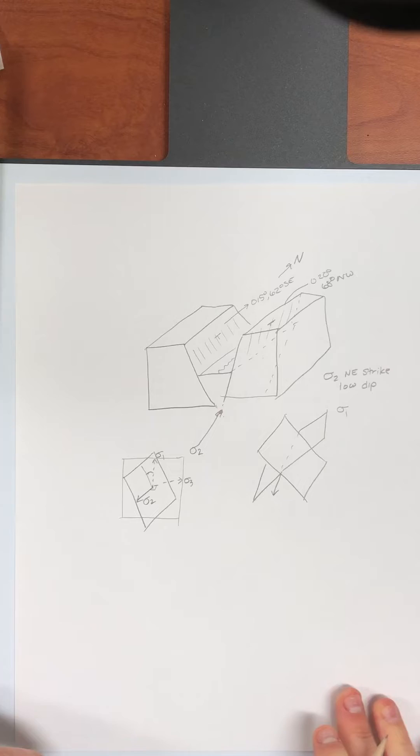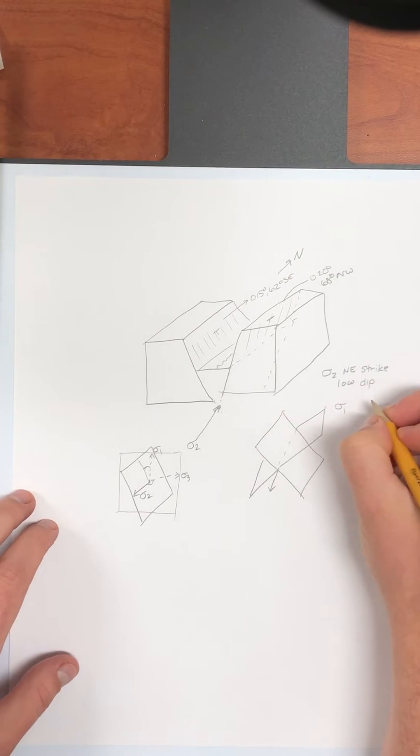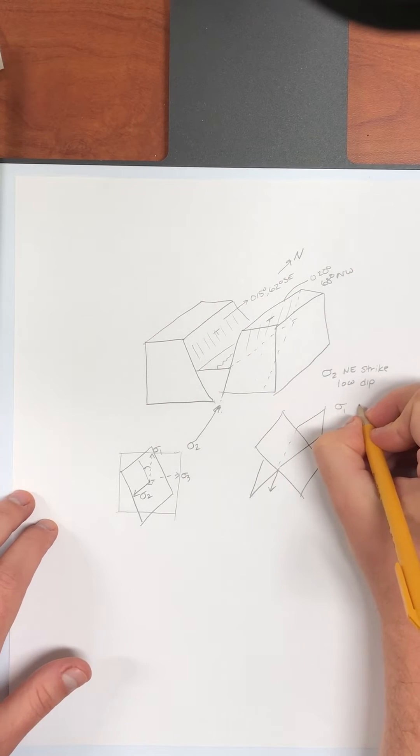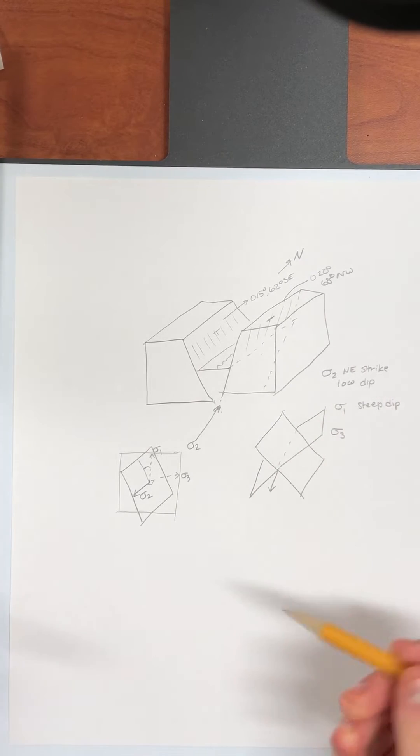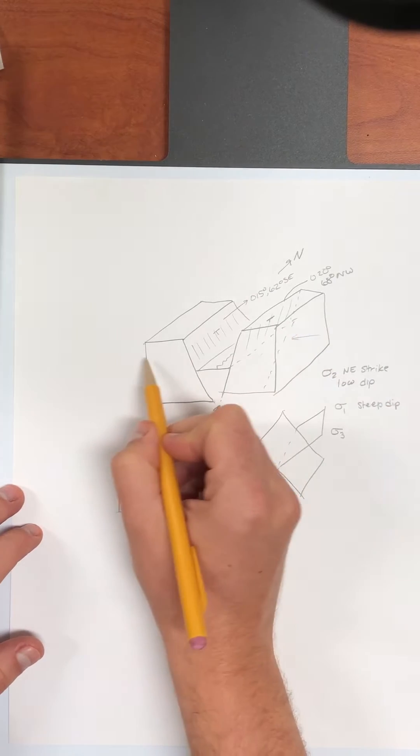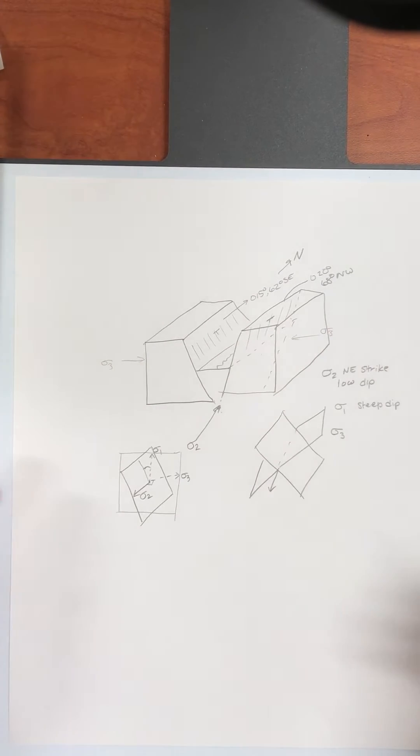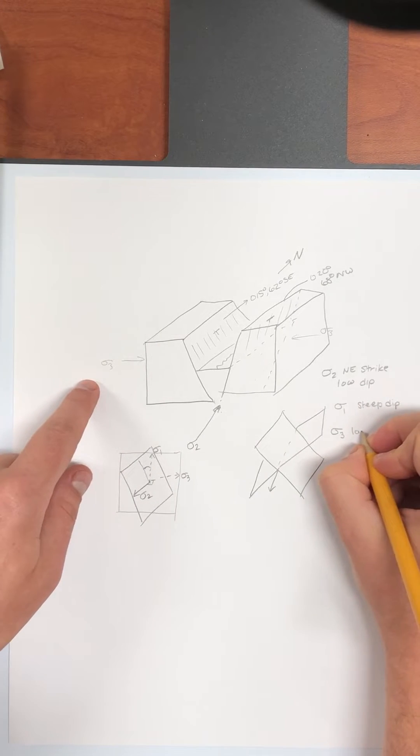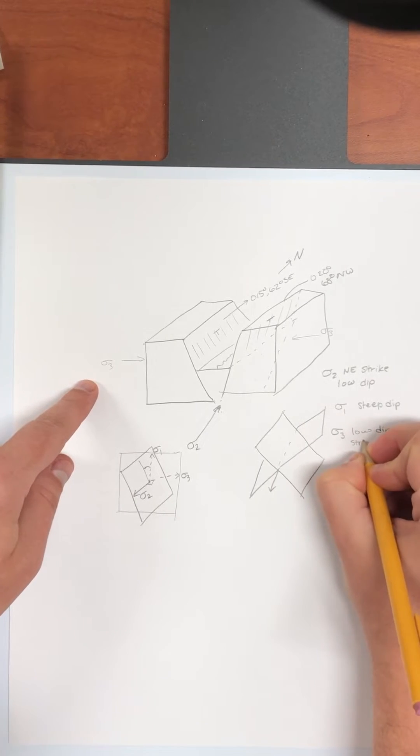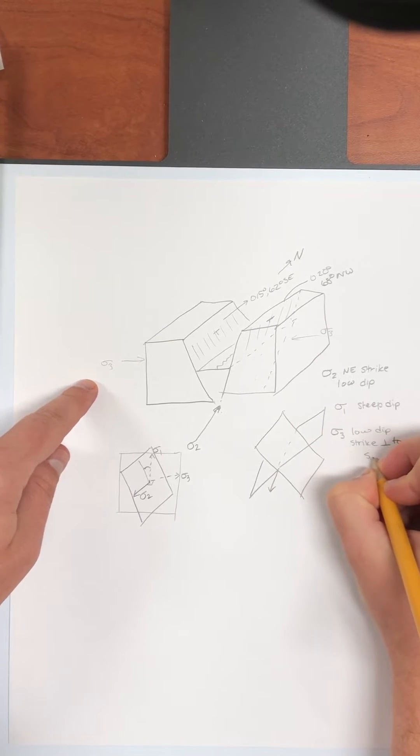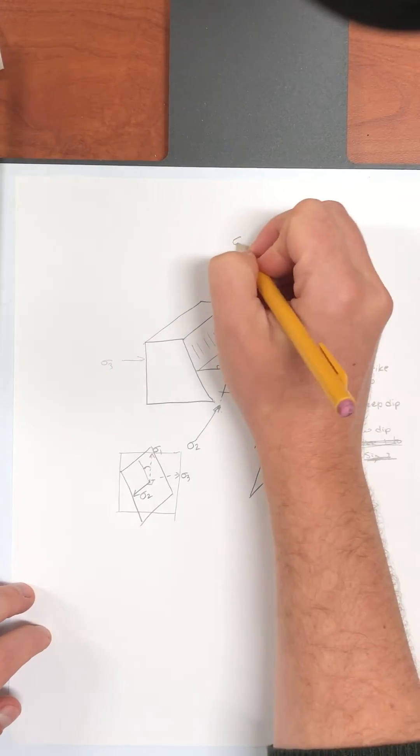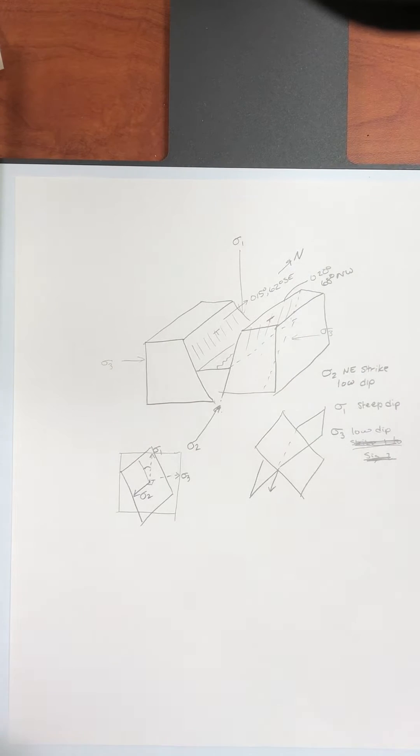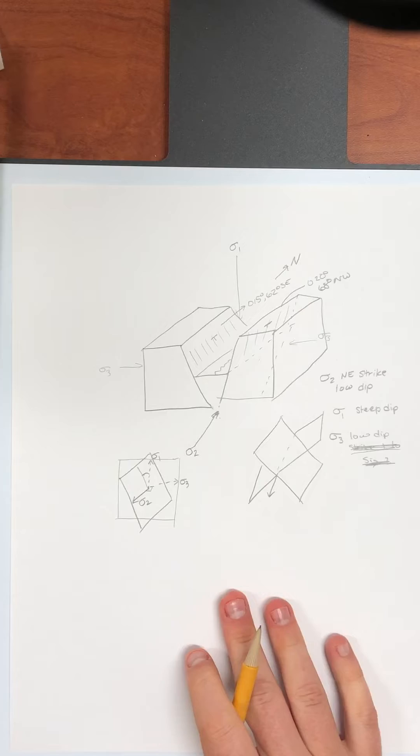For sigma 1 in a normal fault sigma 1 is vertical so here I'm not going to make a prediction about a strike but I'm going to say a steep dip. And sigma 3 the smallest principal stress here is horizontal coming in like this. And so I'm going to say that it's going to have a very low dip and that its strike is going to be perpendicular to sigma 1. So this is my estimation of the scenario that I think is going on. So I think now we're ready to use the stereo net.